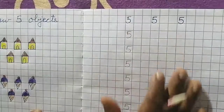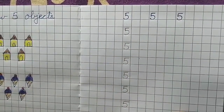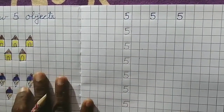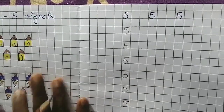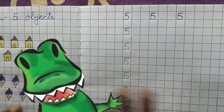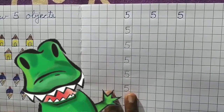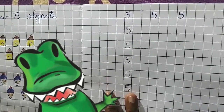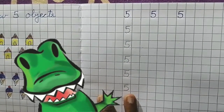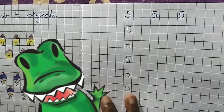This is how you write number 5 in the notebook, children. Write neatly, touch the line and write inside the squares. Likewise, you complete the full page. Parents, please help the children to draw the objects and write number 5, colour it neatly and send. Bye children, see you in my next video. Bye!